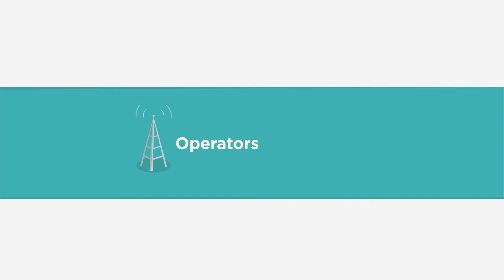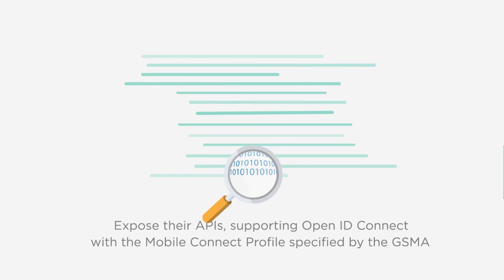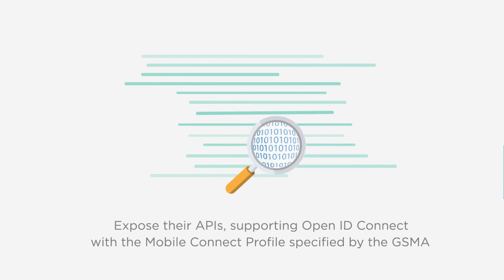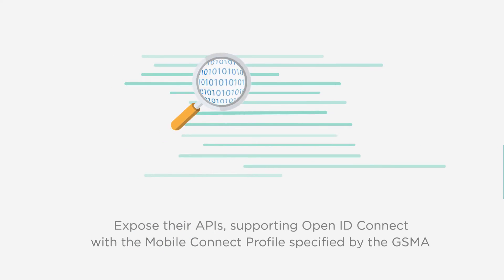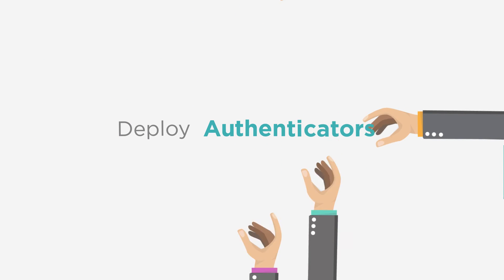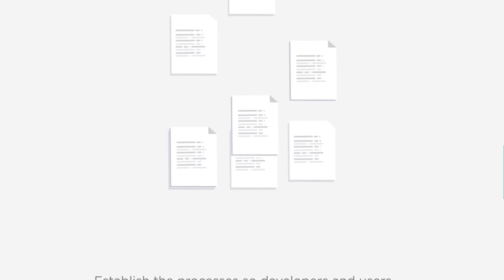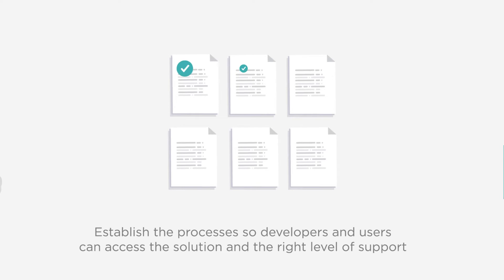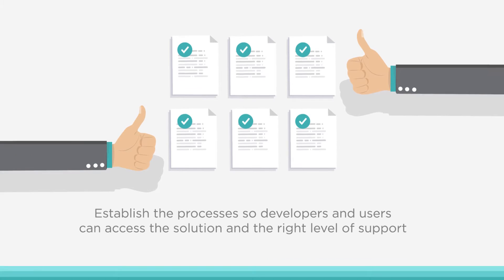To make MobileConnect available, operators need to expose their APIs supporting OpenID Connect with the mobile profile specified by the GSMA. They then need to deploy authenticators and ensure appropriate business processes are in place so that developers and end users can access the solution with the right level of support.